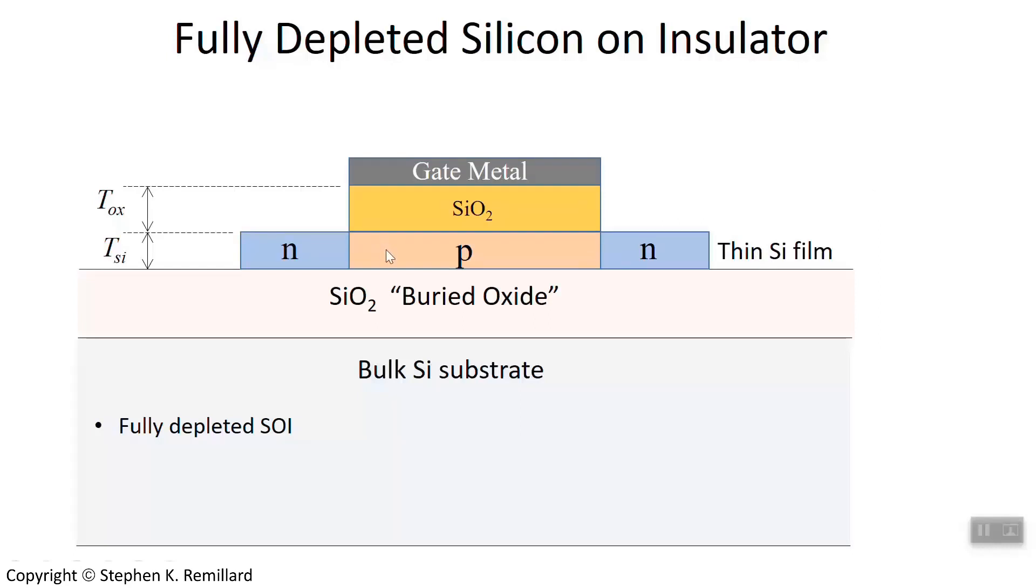With it always in depletion, you avoid that floating body effect. You therefore avoid the reduction of the threshold voltage. And so that is what fully depleted silicon on insulator means. And so you see these PDSOI for partially depleted silicon on insulator, and FDSOI for fully depleted silicon on insulator.